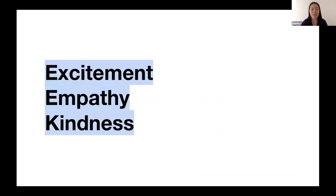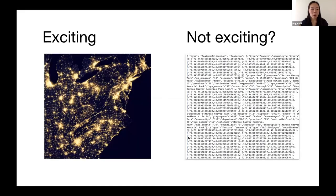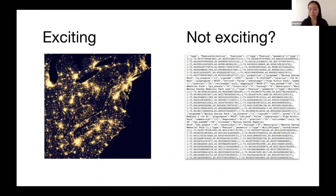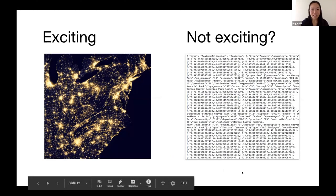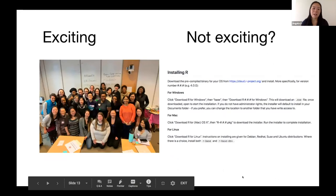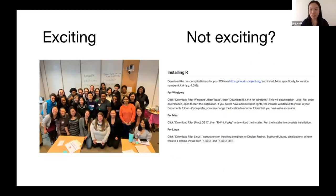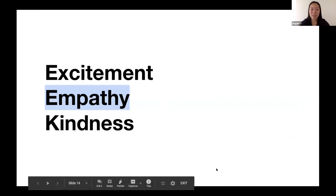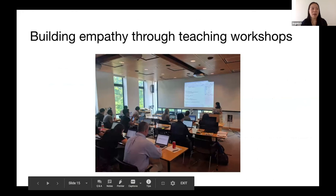I believe excitement, empathy, and kindness are key features of all three of these communities. In terms of excitement, you need to think about what motivates people in your community. Stereotypically, people get really excited by geospatial visualizations and maybe not so excited by data formats and structures. But you have to know your community — maybe it's exciting to finally get R working on your computer, which is pretty exciting if you've never been able to do that before.